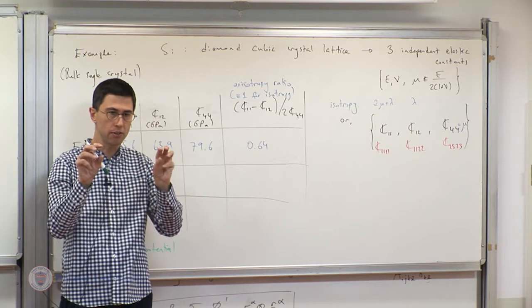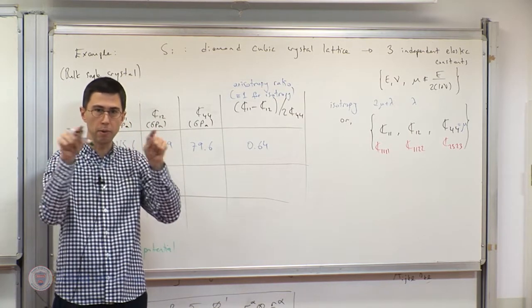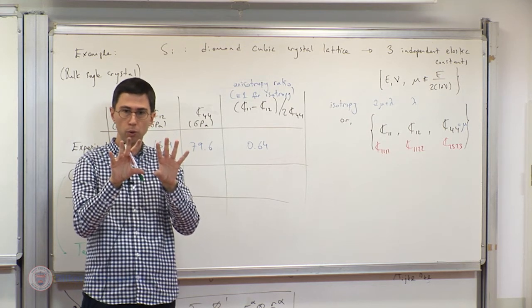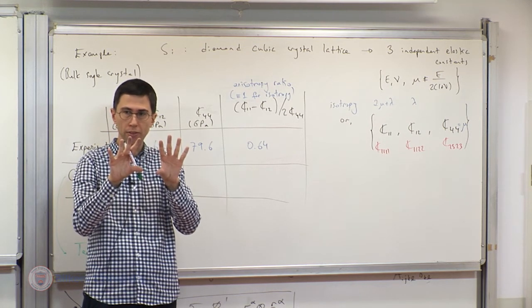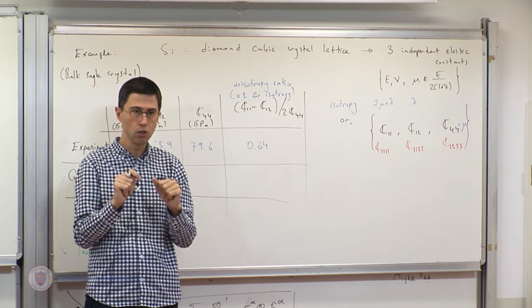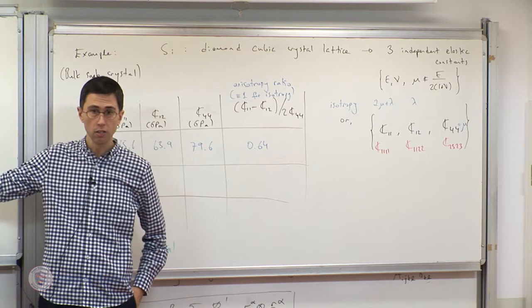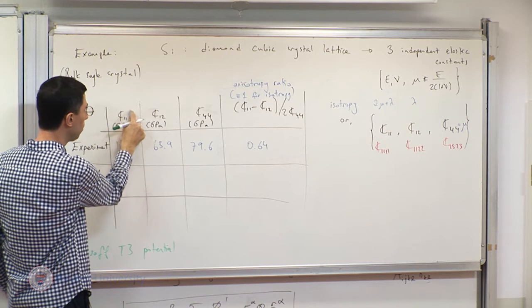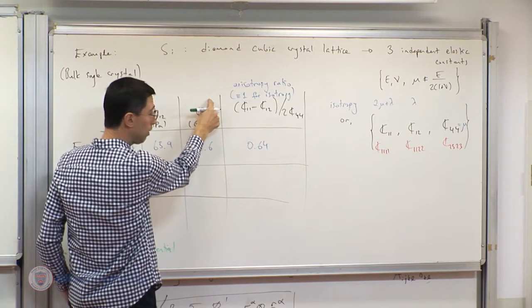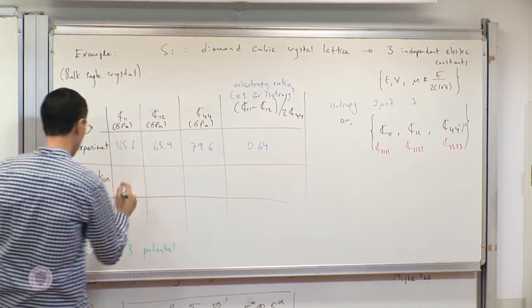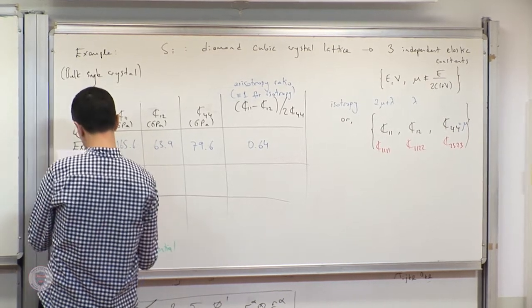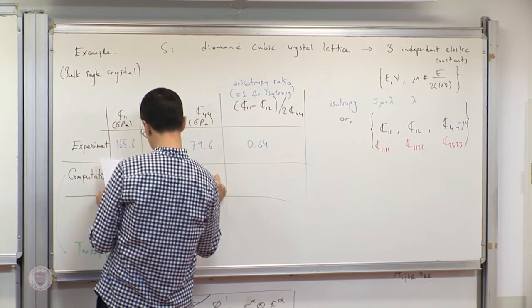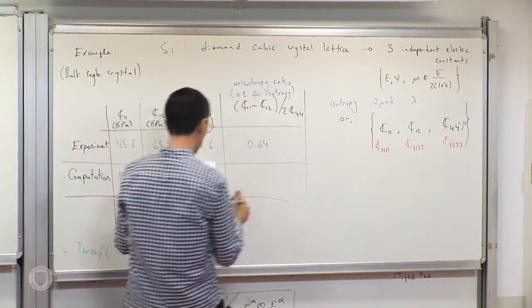Skipping the details of that potential, the rest of the calculations is based on the Cauchy-Born hypothesis. What you have to do is: find the initial equilibrium configuration of the diamond cubic lattice using molecular dynamics, determine the referential relative position vectors, know the interaction potential, plug it into the stiffness tensor expression, evaluate it, extract C_1111, C_1122, C_2323, and plug them in.